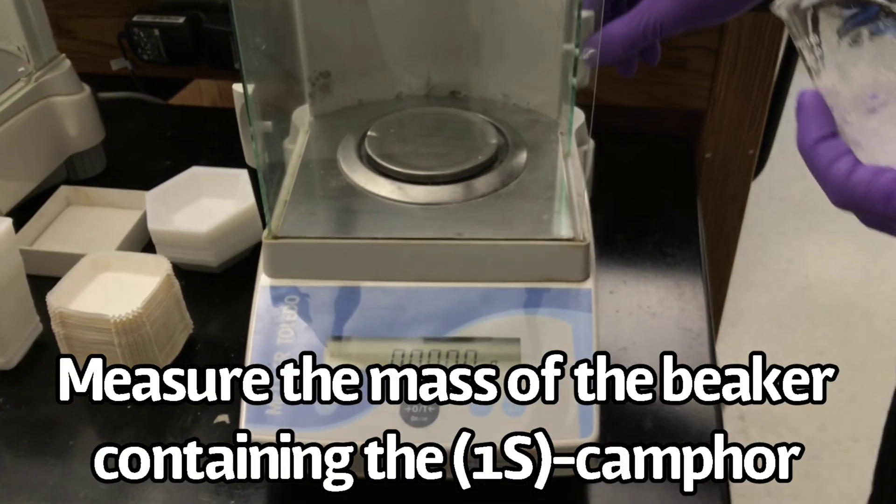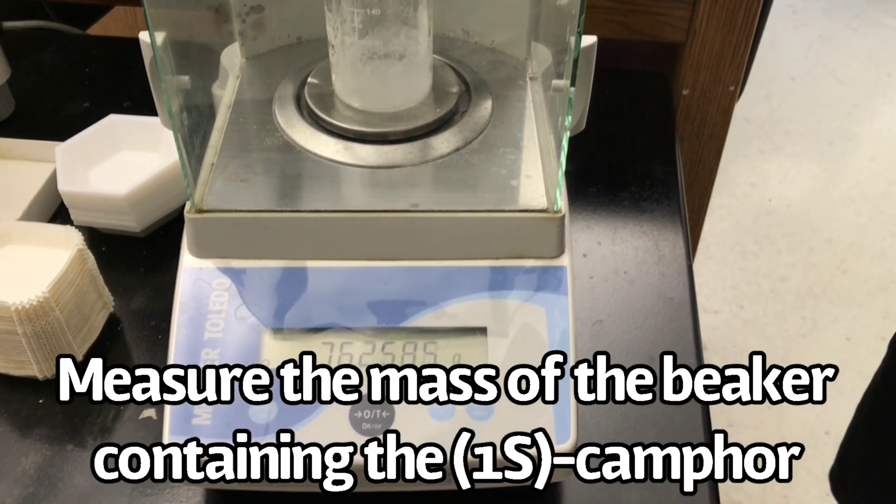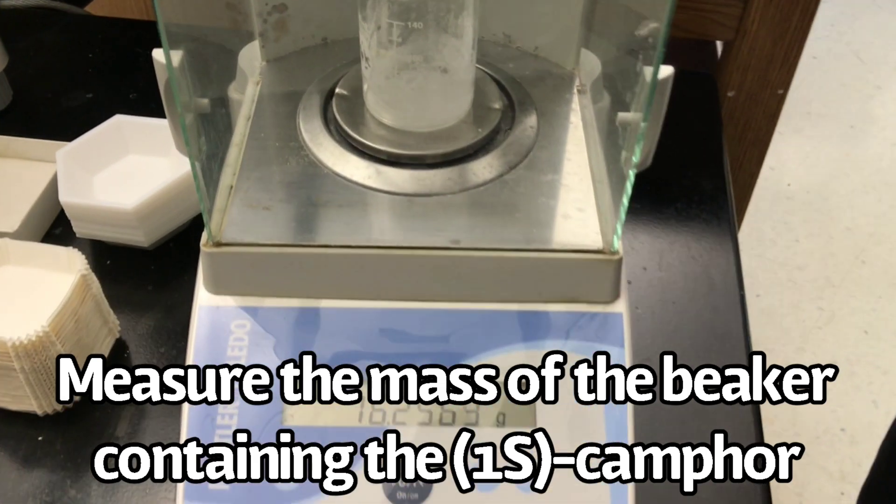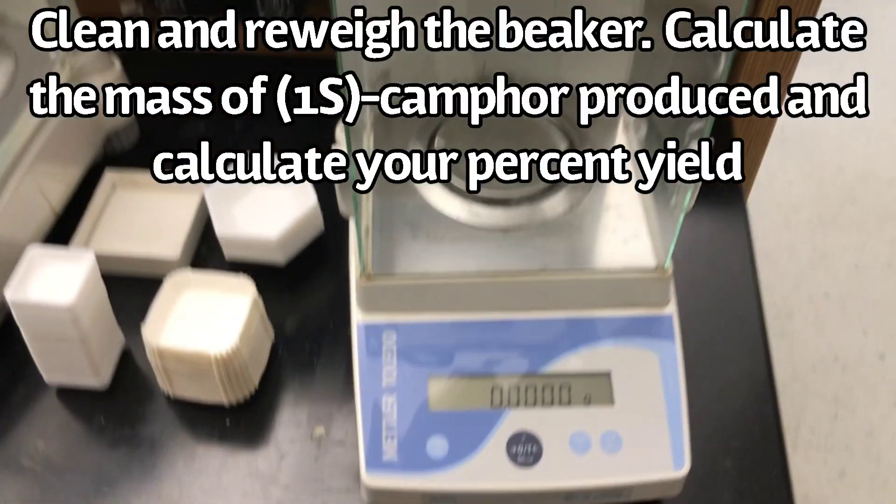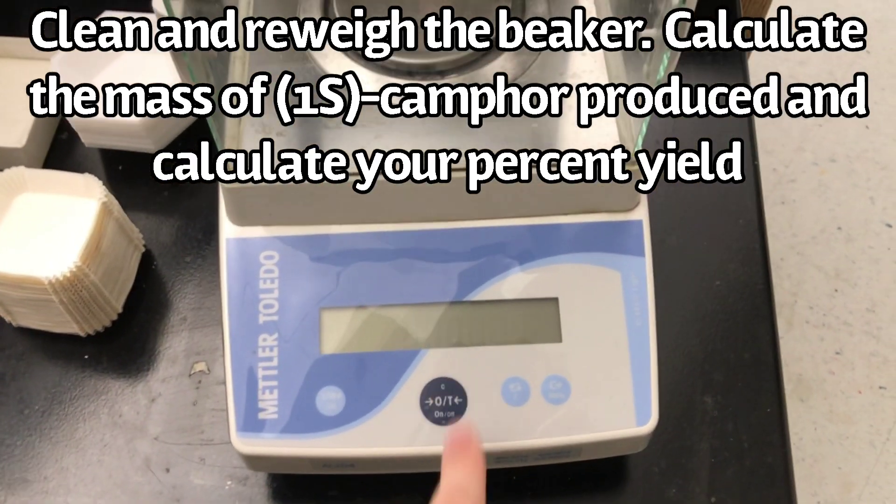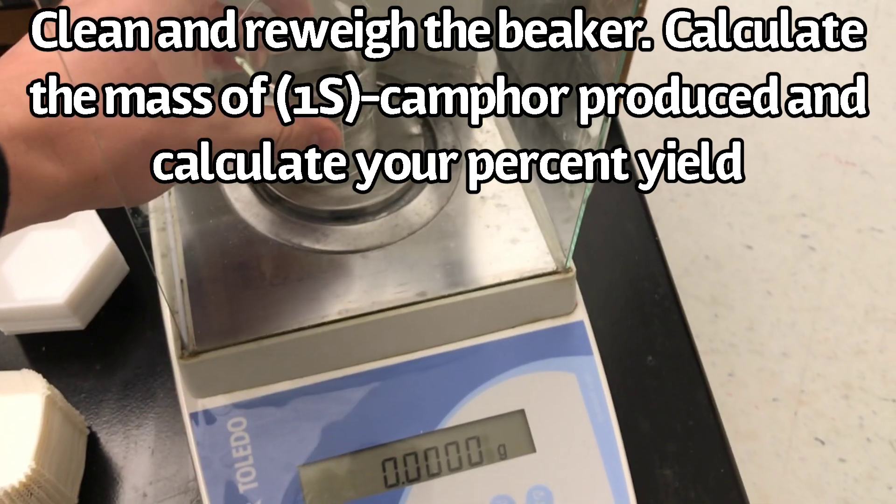Measure the mass of the beaker containing the S-enantiomer of camphor. Clean and re-weigh the beaker, then calculate the mass of camphor produced, then calculate your percent yield.